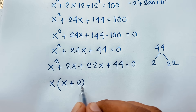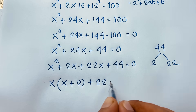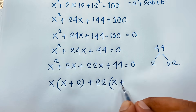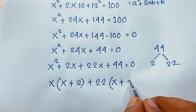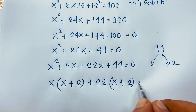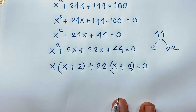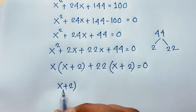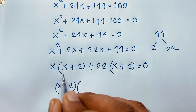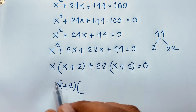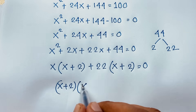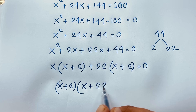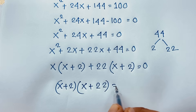Here x is common, so it gives x(x + 2), and 22 is common from the second pair, giving 22(x + 2) = 0. So (x + 2)(x + 22) = 0.